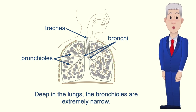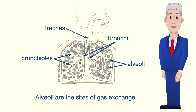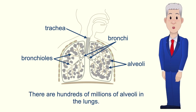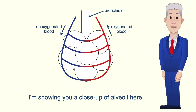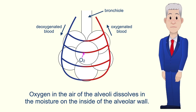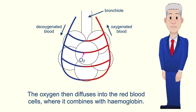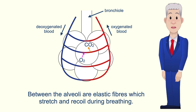Deep in the lungs the bronchioles are extremely narrow and lead into air sacs called alveoli. Alveoli are the sites of gas exchange, and there are hundreds of millions of alveoli in the lungs. The internal walls of the alveoli are covered with a thin layer of moisture. Oxygen in the air of the alveoli dissolves in this moisture and then diffuses into the red blood cells, where it combines with haemoglobin. Carbon dioxide diffuses from the blood into the alveolar airspace. Between the alveoli are elastic fibers which stretch and recoil during breathing.